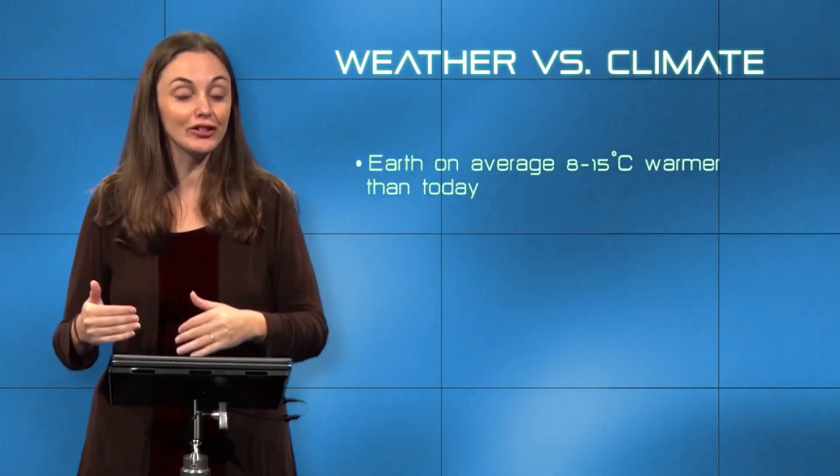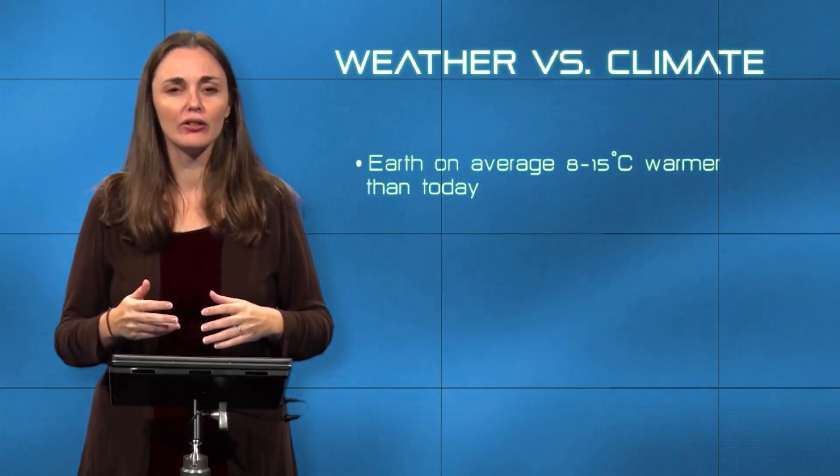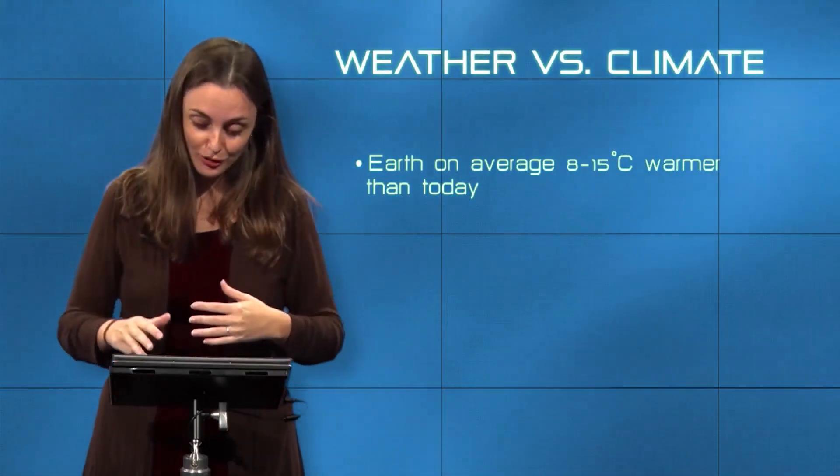Throughout the entire Phanerozoic Eon — basically just the last 540 million years, the entire time where large organisms have been on Earth's surface — temperatures have actually been far, far warmer than today. Those temperatures allowed certain marine organisms and even dinosaurs to be very prosperous. On average across the entire Phanerozoic, Earth has been 8 to 15 degrees Celsius warmer than today — that's a total range of around 15 to 30 degrees Fahrenheit warmer, so substantially warmer than today.